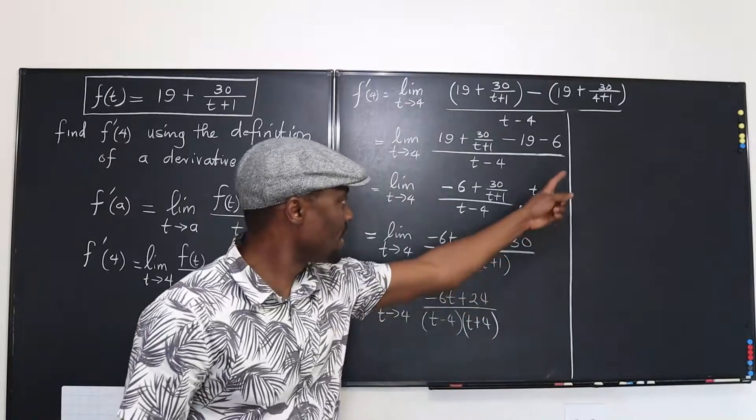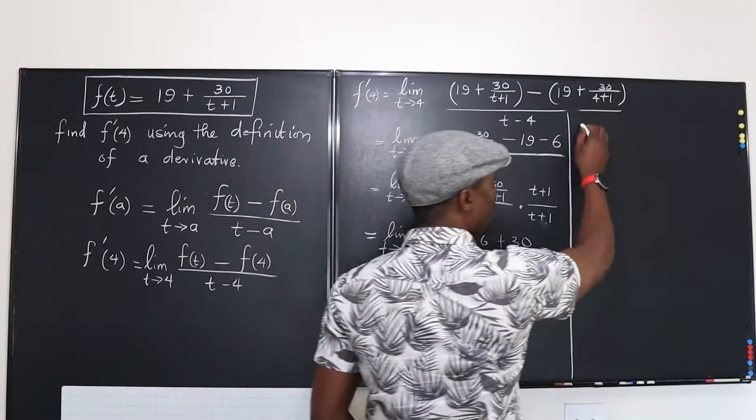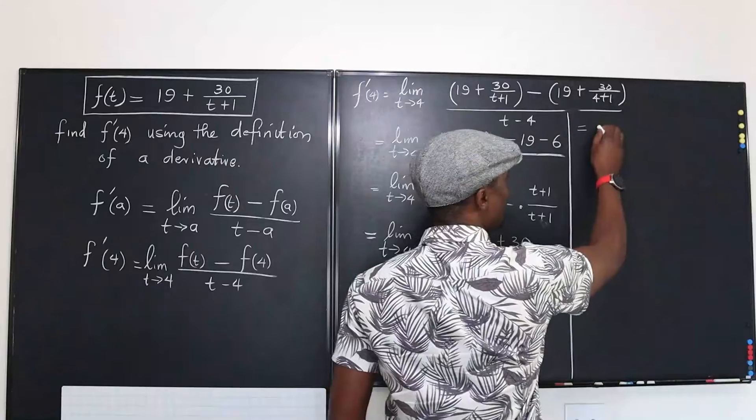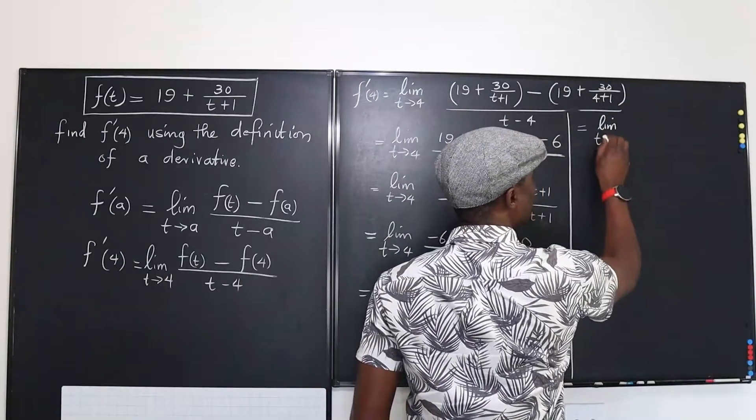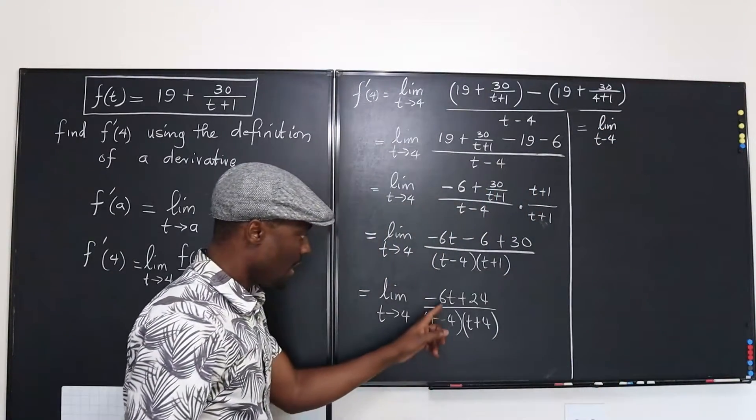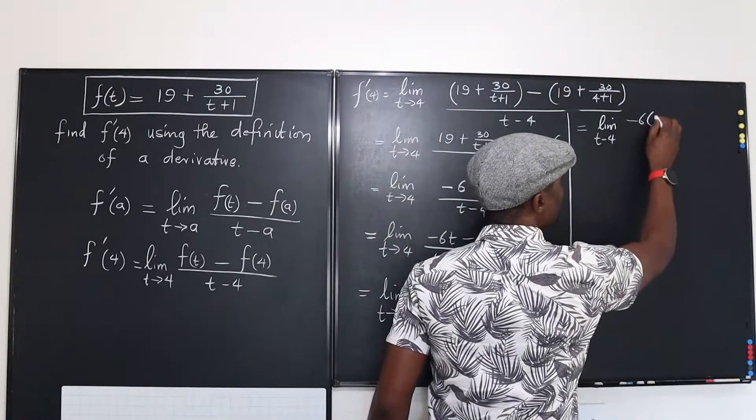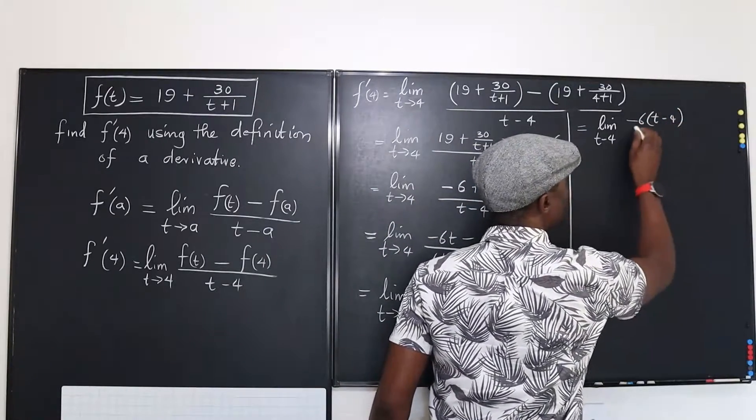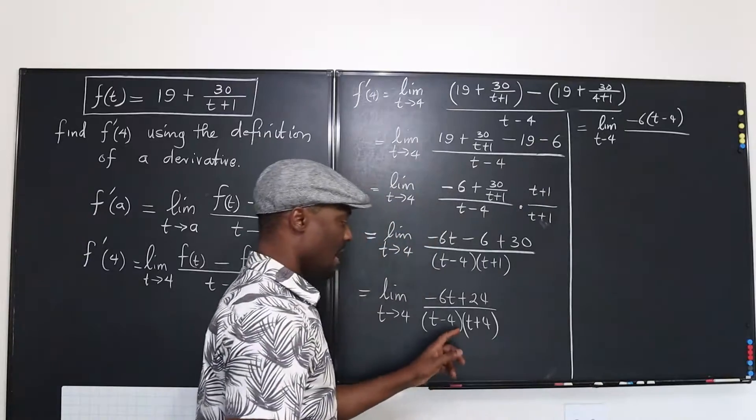So if we go over here, what we're going to see is that if we take out negative 6, we're going to have, this is the same thing as the limit as t goes to 4 of, take out negative 6, that's going to be negative 6 into t minus 4 over t minus 4.